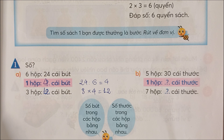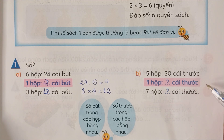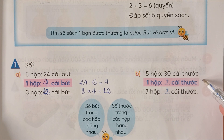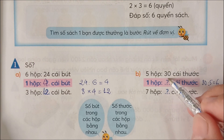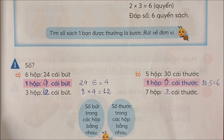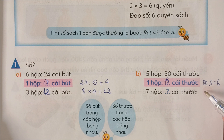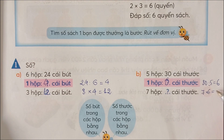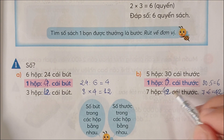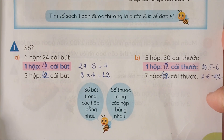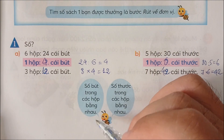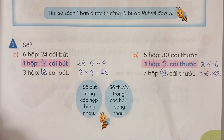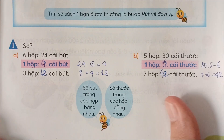5 hộp là 30 cái, thì 1 hộp là bao nhiêu cái? Ta lấy 30 chia 5 bằng 6, 1 hộp là 6. 7 hộp là bao nhiêu? 7 x 6 bằng 42 cái thước. Số bút trong các hộp bằng nhau, số thước trong các hộp bằng nhau.